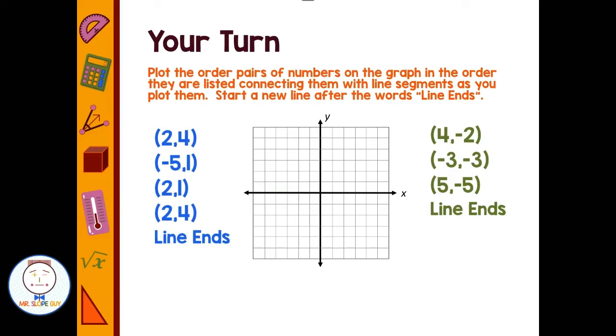So what they're saying is plot your first point, plot your second point, and then make a line connecting those two points. Add your third point, connect it to the other point. So you want to connect as you go. Start by plotting your first two points, connect those together, and then continue connecting them until you hit 'line ends.' Go ahead and try to graph both of these lines. Pause the video here, come back, we'll see how you did.